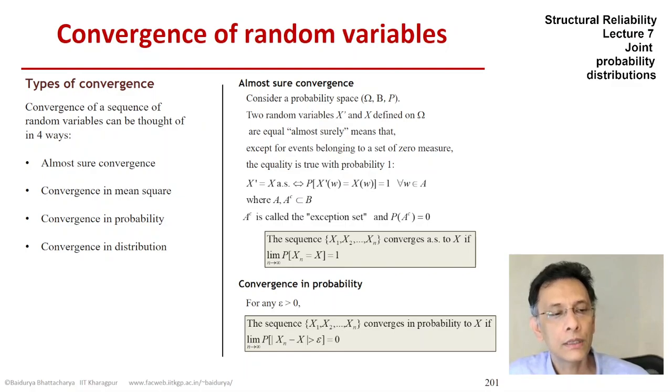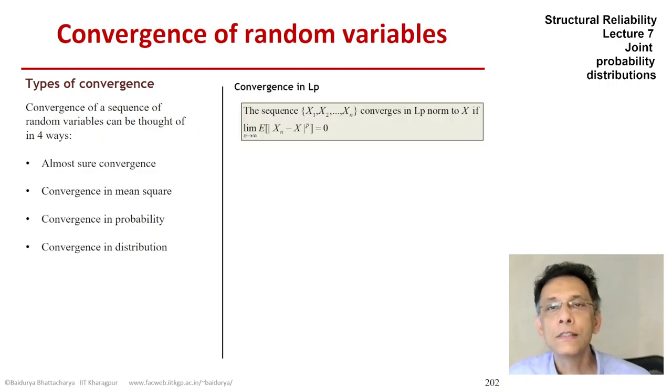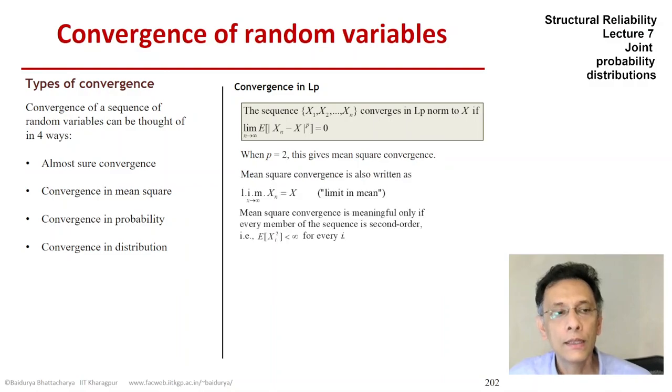Now, if we replace the probability in the limit in convergence in probability with the expectation, the expectation of the difference or the expectation of the p-th norm between X and Xn, then what we get is the convergence in Lp-norm. And if p is 2, that gives mean square convergence, which we also call limit in mean. And obviously, it makes sense only for those cases where the second order, the expectation of X squared actually exists. But this would be the definition of the mean square convergence.